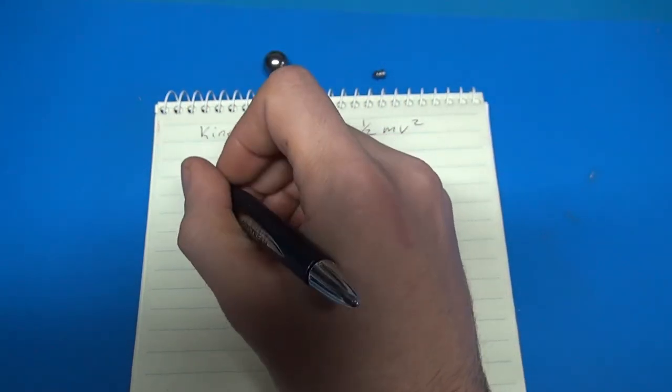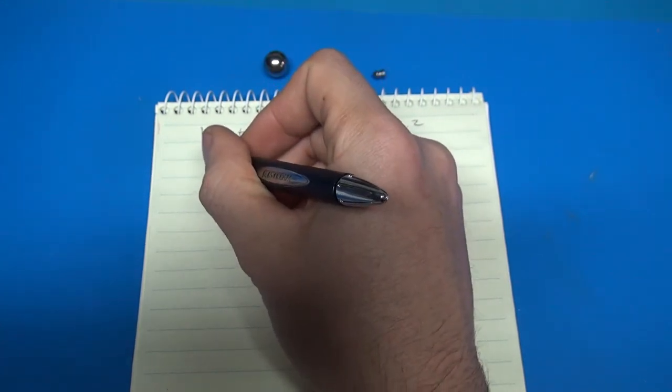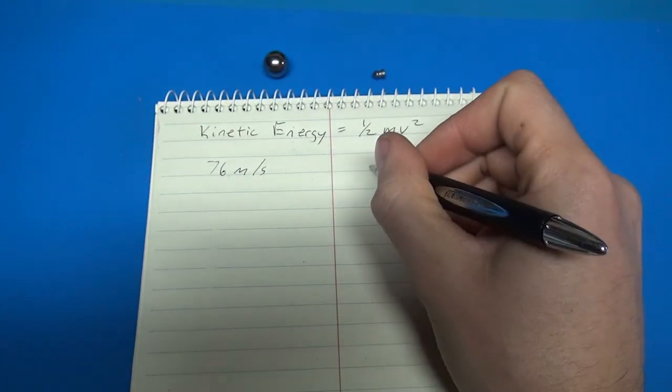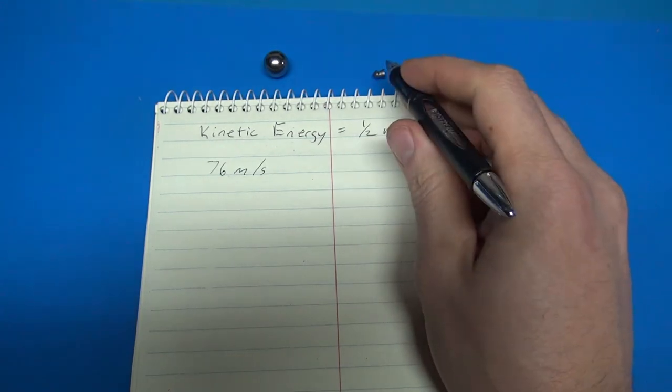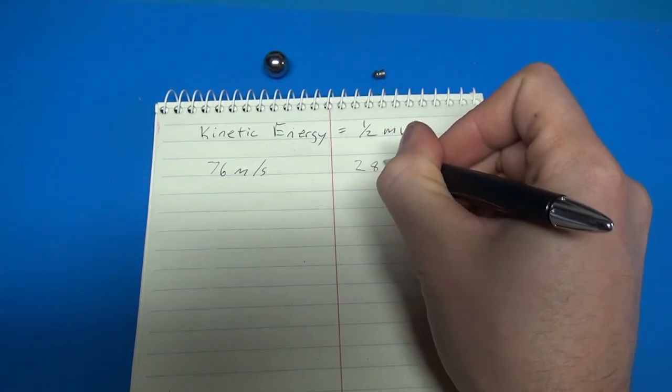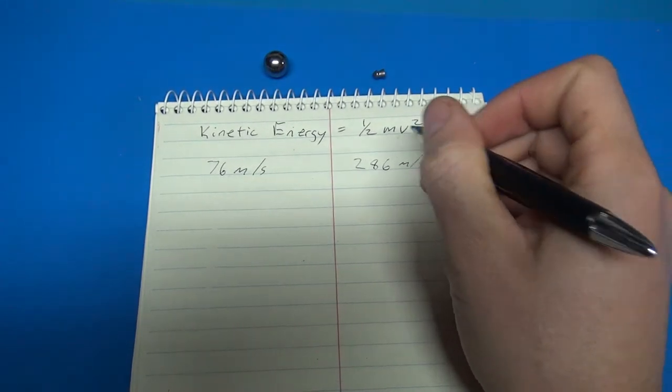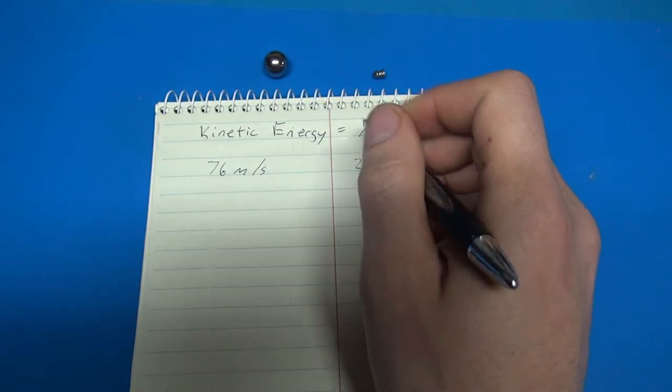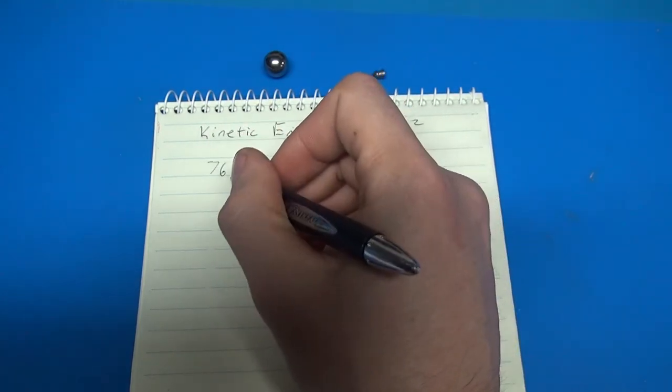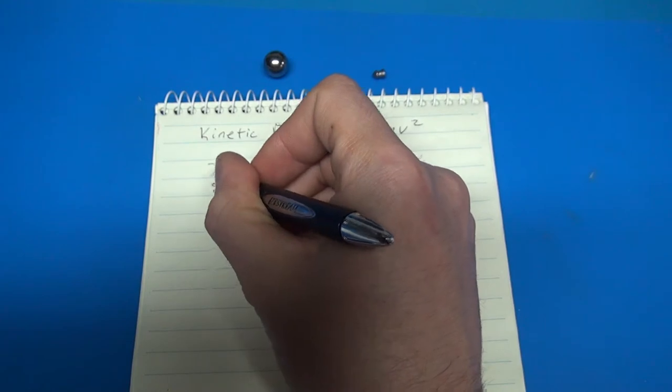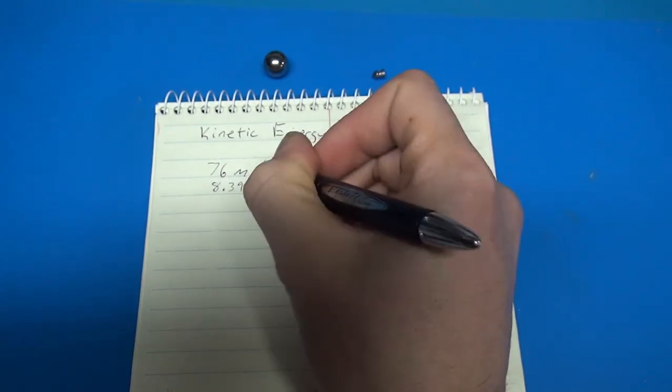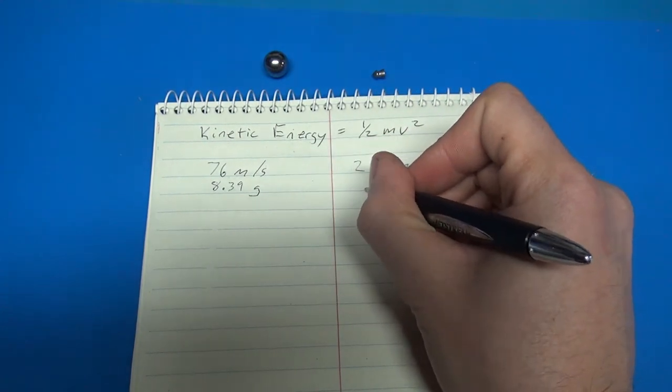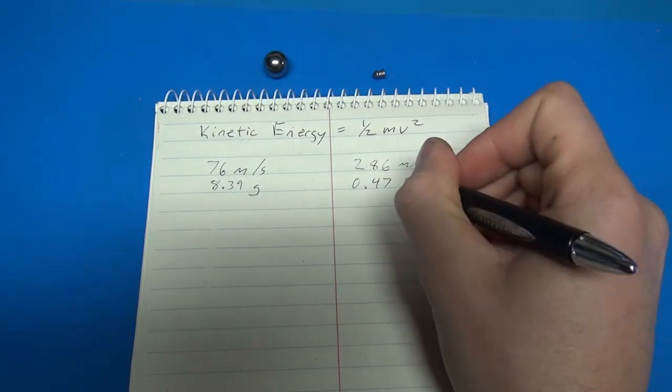So for the ball bearing, I measured the velocity as 76 meters per second. And the velocity of the pellet here was 286 meters per second. Now the other piece of information I needed was the mass. So the mass for the ball bearing was 8.39 grams. And the mass for this little pellet here, which is obviously much smaller, is 0.47 grams.